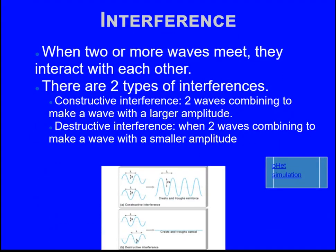Then we have interference. When two or more waves meet, they interact with each other. There are two types of interference. We have something called constructive interference where two waves combine together to make a wave with a larger amplitude, and then we have destructive interference where two waves combine to make a wave with a smaller amplitude.